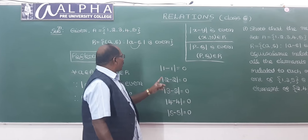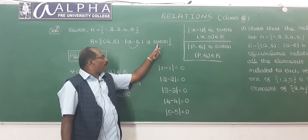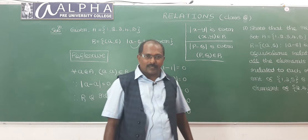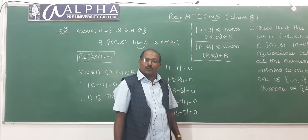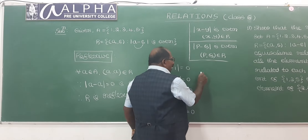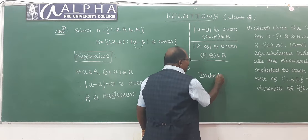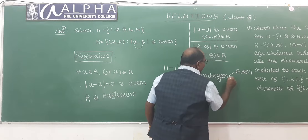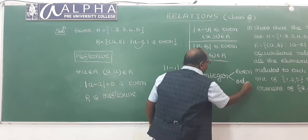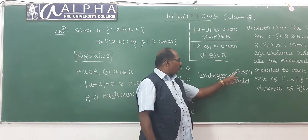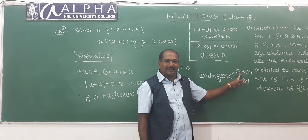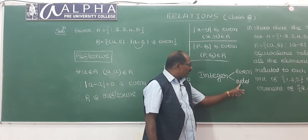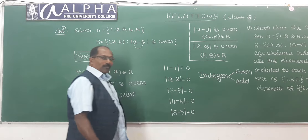Since we have the word 'even' here, before finding the solution for this problem, I want to share something already known to you. An integer is either even or odd. An integer is called even if it is divisible by 2. If it is not divisible by 2, then it is called odd.